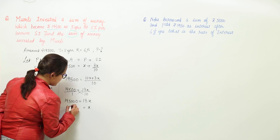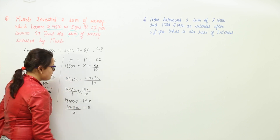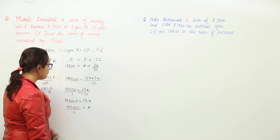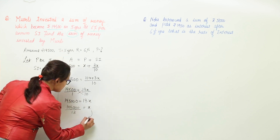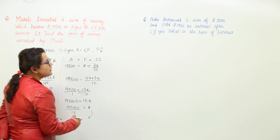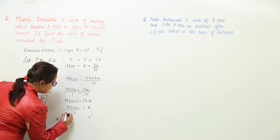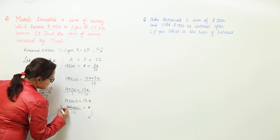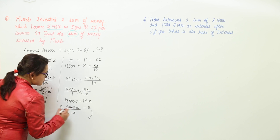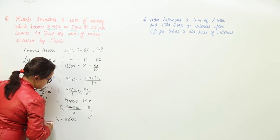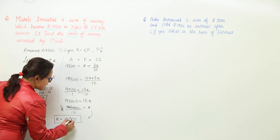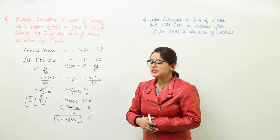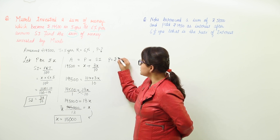So x = 195,000 ÷ 13. Dividing 195,000 by 13: 13 ones are 13, remainder gives 65, and 13 fives are 65 — so x = 15,000. Since x was assumed to be the principal, the principal invested by Murali is rupees 15,000.